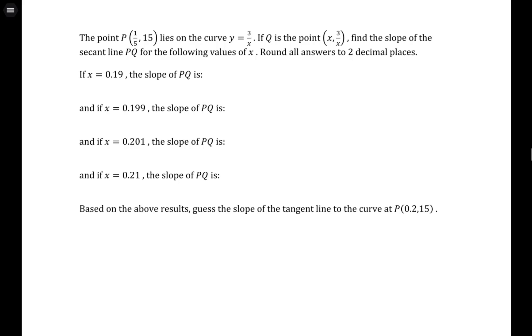The point P(1/5, 15) lies on the curve y = 3/x. If Q is the point (x, 3/x), find the slope of the secant line PQ for the following values of x.